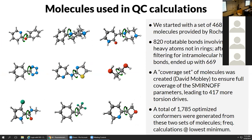Which molecules did we use? We started with 468 small molecules provided by Roche and Xavier Lucas, our contact there. From these molecules, we identified 820 rotatable bonds involving four heavy atoms not in rings - the most obvious candidates for torsion drives. Because we're doing these in the gas phase, we filtered out torsion drives where there were strong intramolecular hydrogen bonds, and we ended up with 669.